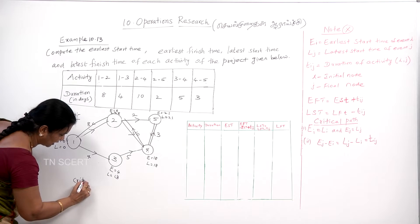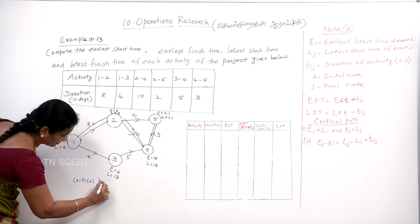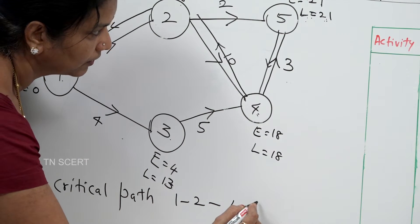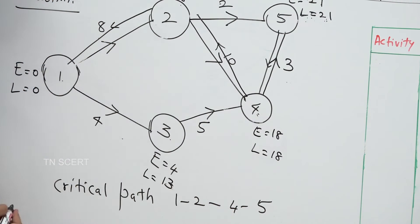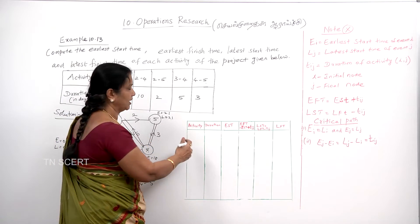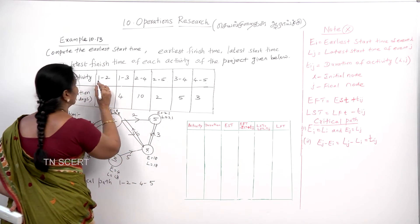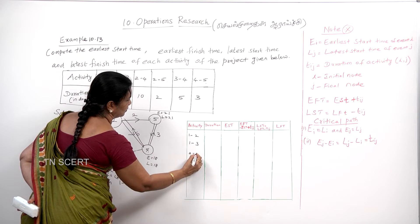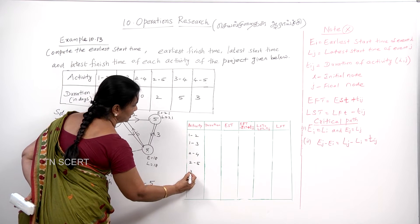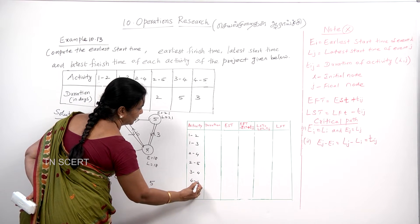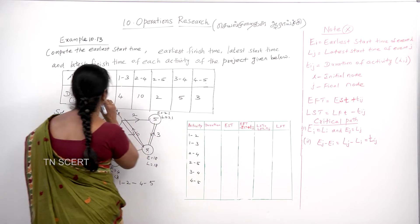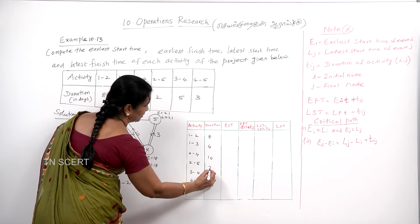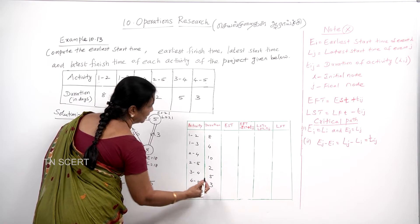What is the critical path? The critical path is 1→2, 2→4, 4→5. Now the network has activities: 1→2, 1→3, 2→4, 2→5, 3→4, 4→5. The durations are: 8, 4, 10, 2, 5, 3 days respectively. Duration is now confirmed.